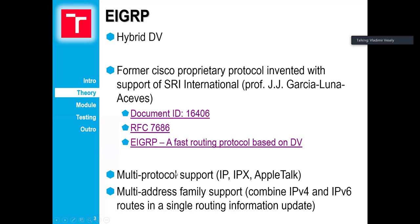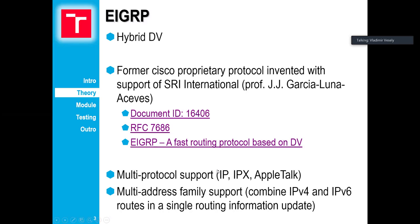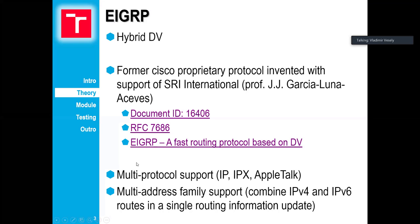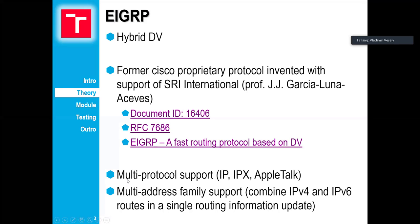EIGRP offers multi-protocol routing, which means it can carry routing information not only for IP but also for IPX, AppleTalk, or any future protocol. It has a very nice protocol design which allows EIGRP to be expanded quite easily — for instance, comparing to OSPF.